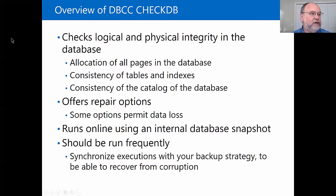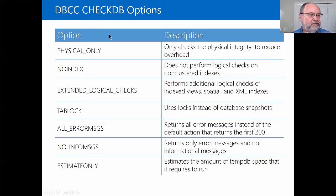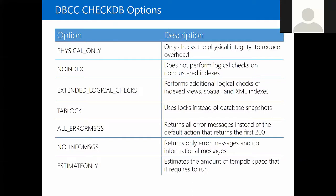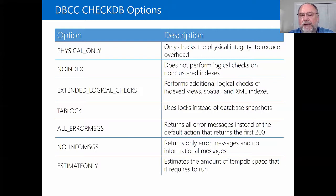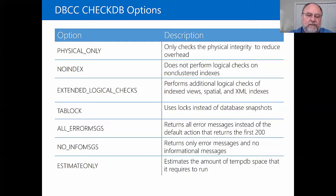If your backups are automated, you would put CheckDB in as step one, and if that returns an error, don't run the automated backup — or you can go ahead with the backup anyway but be aware you need to fix the problem next morning. Definitely want to run CheckDB as part of your automation. You can set it up so that if it errors out it simply won't run the backup.